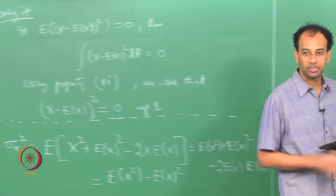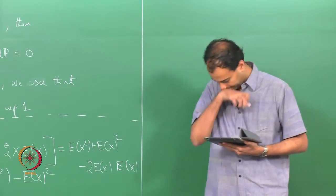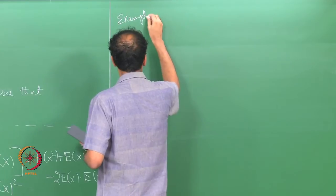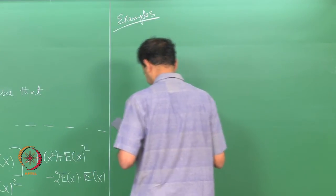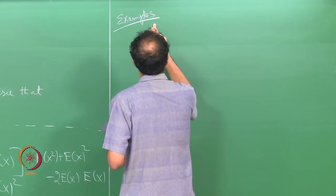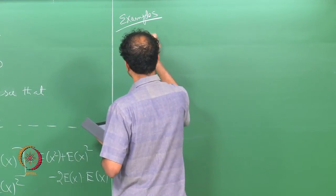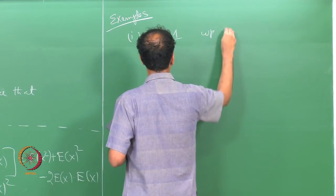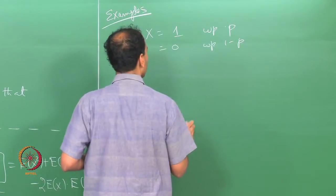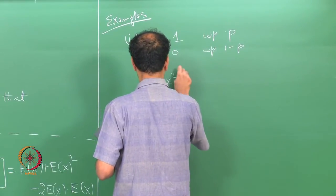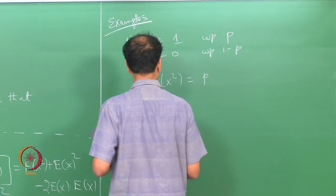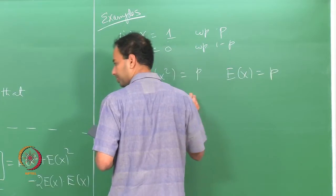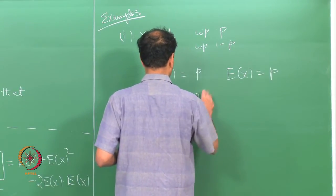Let us look at some examples. For a Bernoulli random variable — x = 1 with probability p and x = 0 with probability 1 - p — we have E[x²] = p and E[x] = p, so the variance of x equals p(1 - p).